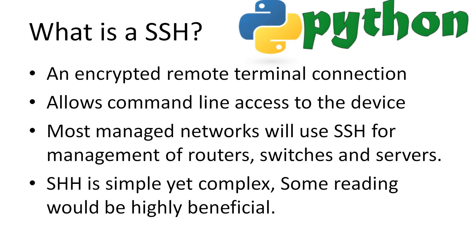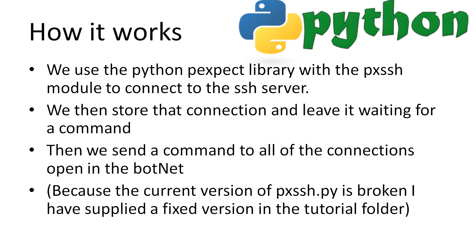We're going to need to set up an SSH server to test our botnet on, so I'll go through how to install one on our Ubuntu build. If you're using a different system, it may be easier to Google a guide to set up an SSH server on your operating system. We're going to use the pexpect library with the pxssh module to connect to the SSH server. Once we connect, we store the connection and have it wait for a command, and we can then call a function to send a command to all of the servers in our list. The current version of the pxssh module has an annoying bug — it works on some machines and doesn't on others, so I've uploaded a fixed version of the module in the slides folder. Download the pxssh.py file and make sure you put it in the same folder as your code file.